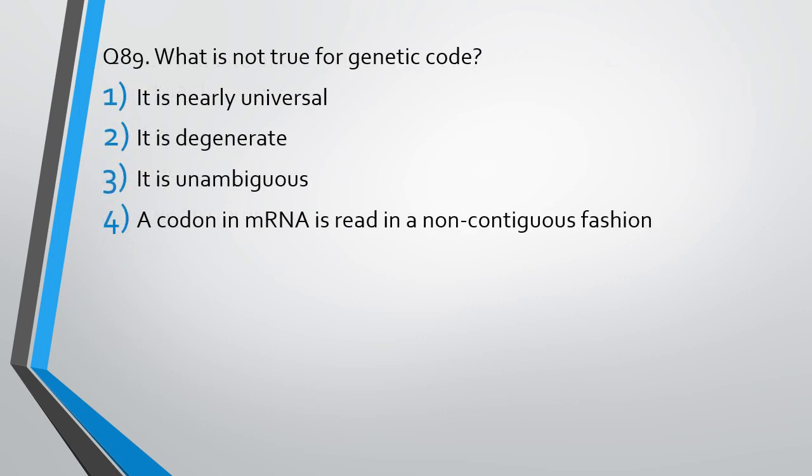Question number 89. What is not true for a genetic code? It is nearly universal, it is degenerate, it is unambiguous, a codon in mRNA is read in a non-contiguous fashion. The correct answer is option 4 is not true for a genetic code.